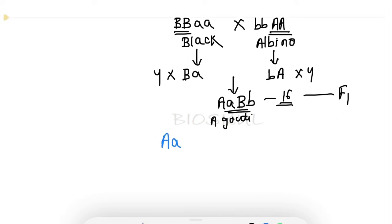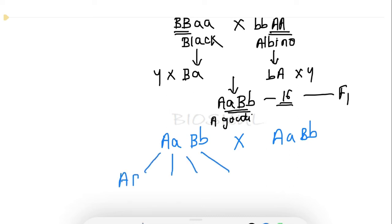Now we self-cross the F1 generation: AaBb × AaBb. This produces four types of gametes: AB, Ab, aB, and ab.